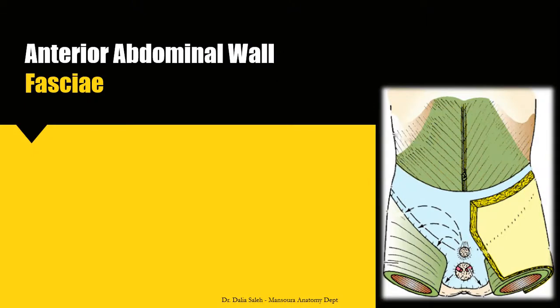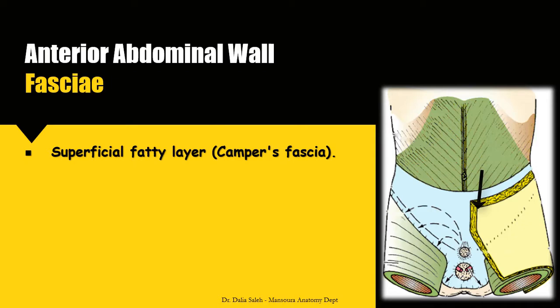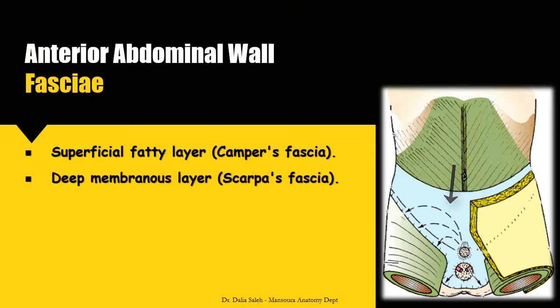Beneath the skin of the anterior abdominal wall, we can see the superficial fascia, which is continuous with the rest of the superficial fascia of the body. But below the level of the umbilicus, the superficial fascia discriminates into two distinct layers: a superficial fatty layer and a deep membranous layer. The deep membranous layer extends downwards below the inguinal ligament to attach to the fascia lata of the thigh. It also makes a sheath around the penis and scrotum, attaches on each side to the inferior pubic ramus, and backwards into the perineal body.